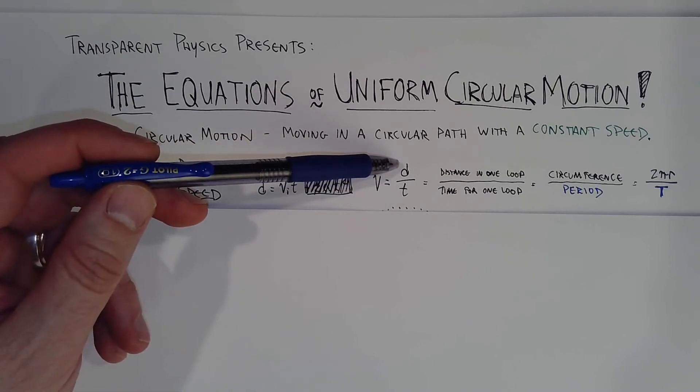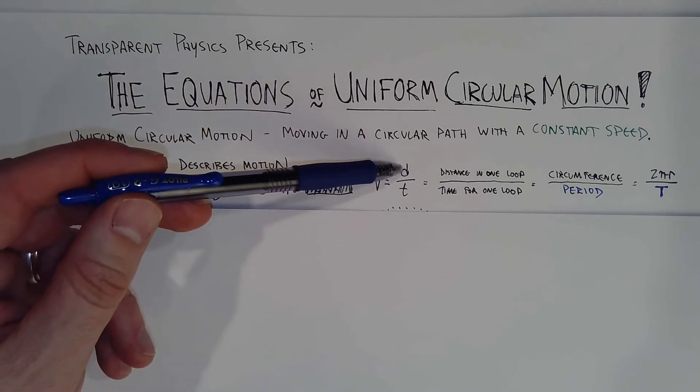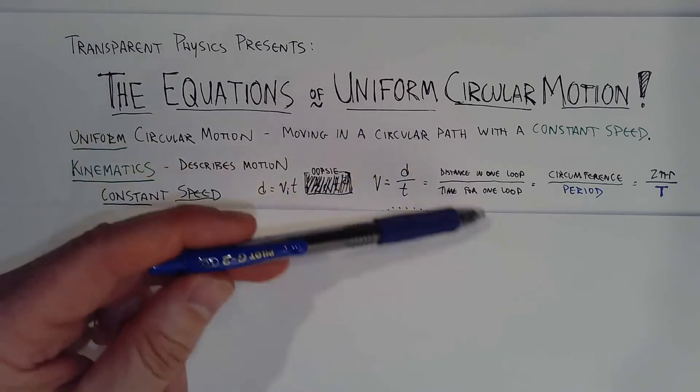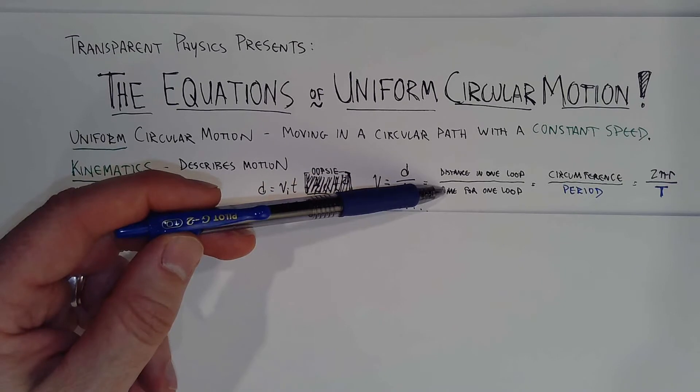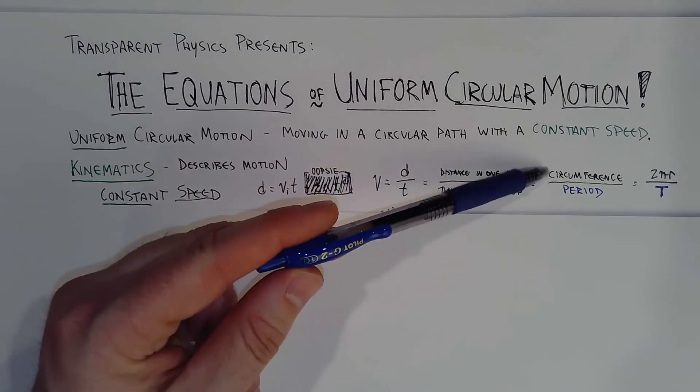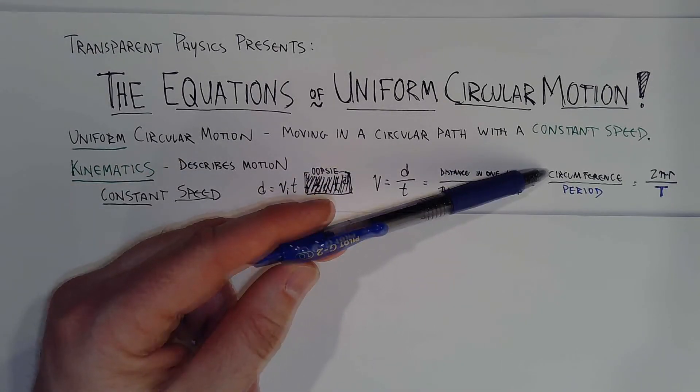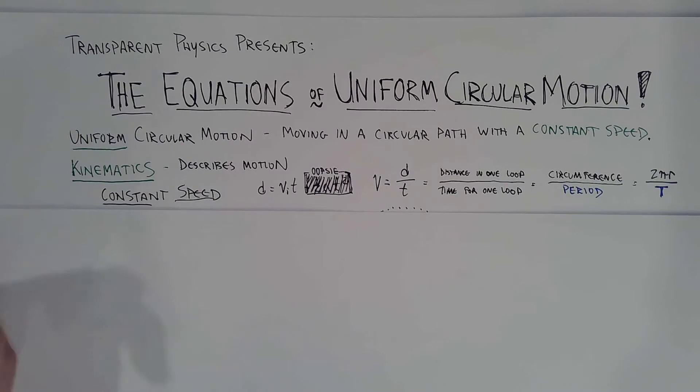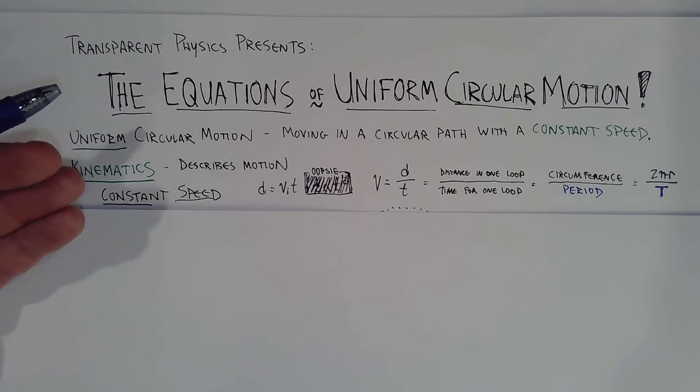If we're talking about this in the context of a circular path, we could argue that d is the distance that you travel in one loop. We could argue that t is the time it takes to travel one loop. The distance to travel one loop is known as the circumference. A possibly new term for you is this guy right here. Time to complete one loop is known as the period. As you study more physics, the term period is going to reappear in several different places. It's just a way to talk about the amount of time it takes to complete a cycle.